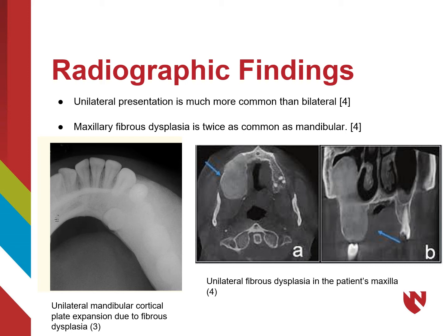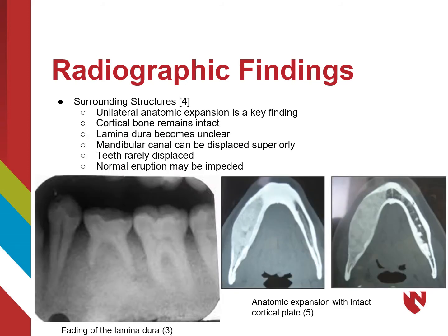On the picture on the left, we see a mandibular occlusal radiograph with unilateral fibrous dysplasia that has expanded the buccal and lingual plates. On the radiographs on the right, we see an axial and coronal view of the patient's maxilla with unilateral fibrous dysplasia on the patient's right side. Unilateral anatomic expansion is a distinct finding with fibrous dysplasia. This means that the overall shape and form of the bony structures are maintained and intact, but they are expanded.